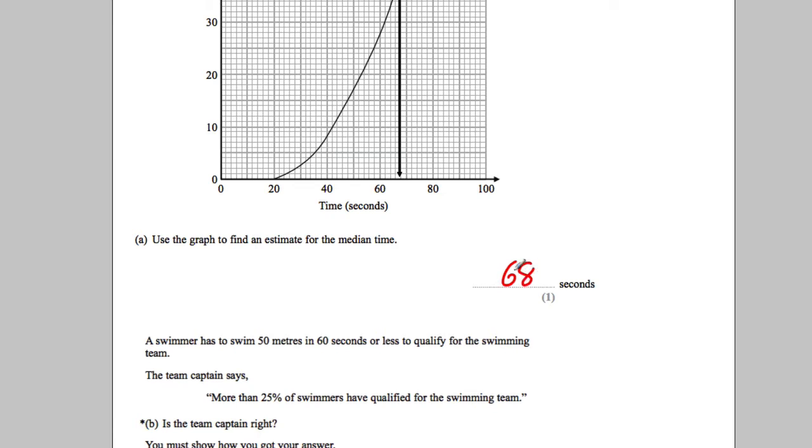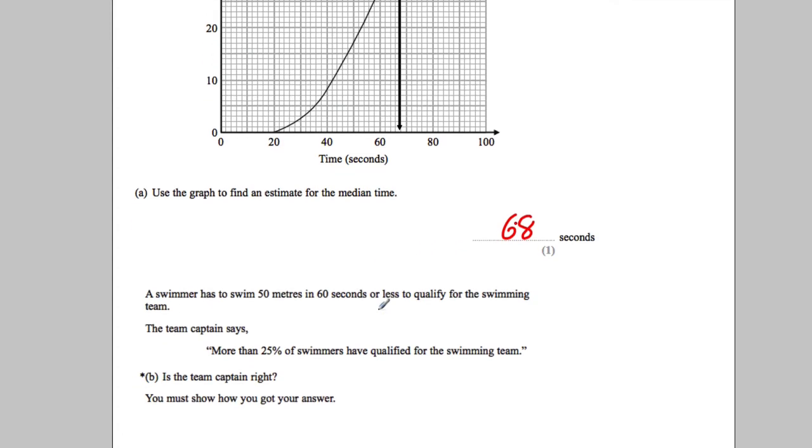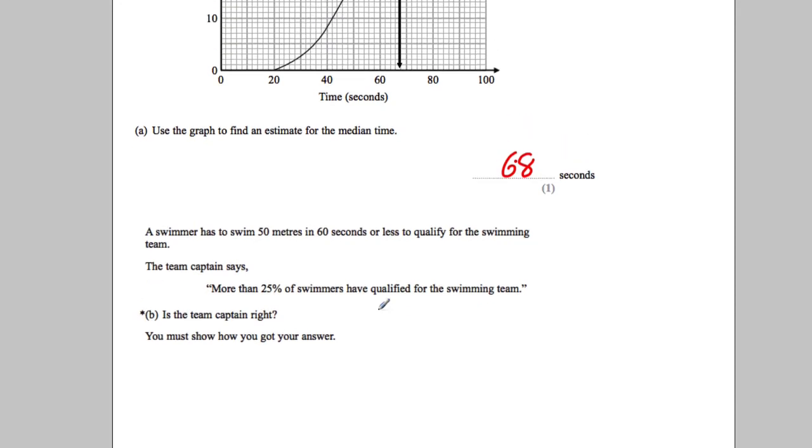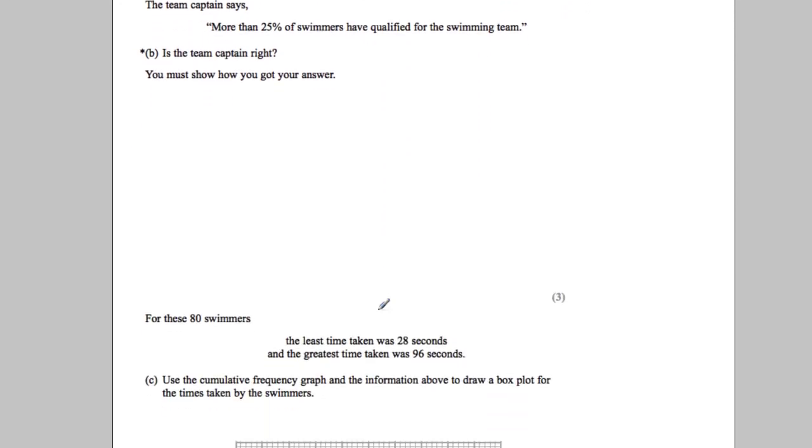Okay, so that's for the first part. Right, next. A swimmer has to swim 50 meters in 60 seconds or less to qualify for swimming. The team captain says more than 25% of the swimmers have qualified for the swimming team. Is the team captain right? You must show your answer.